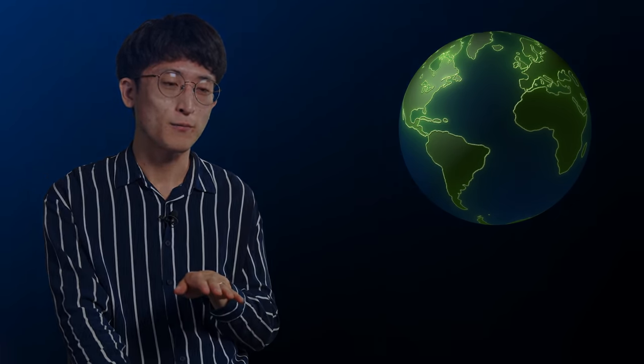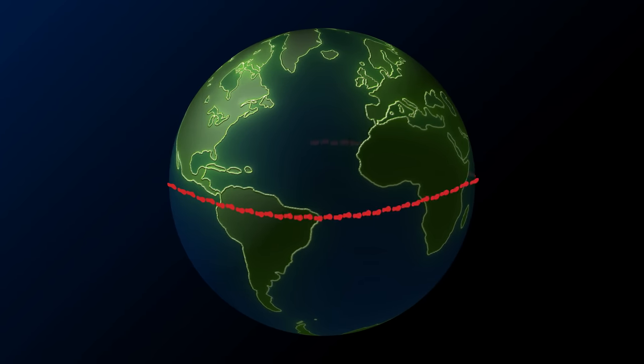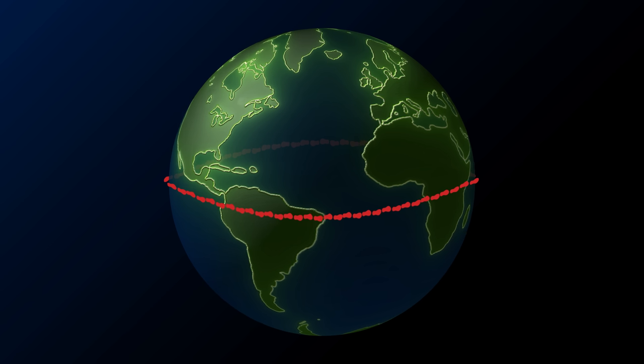When you try to measure the circumference of earth by counting your footsteps while you are walking heel to toe, then you have to count those number of footsteps really, really precisely. You have to remember those numbers really well. If you miss a few tens of steps, then you immediately lose this precision.